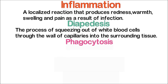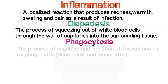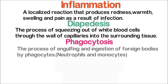Phagocytosis is the process of engulfing and ingestion of foreign bodies by phagocytes. The phagocytes are neutrophils and monocytes, which are types of white blood cells.